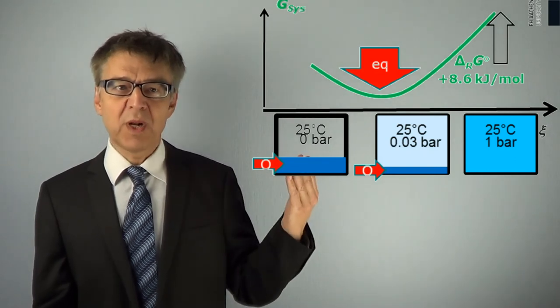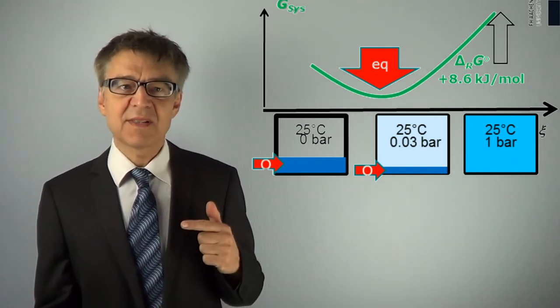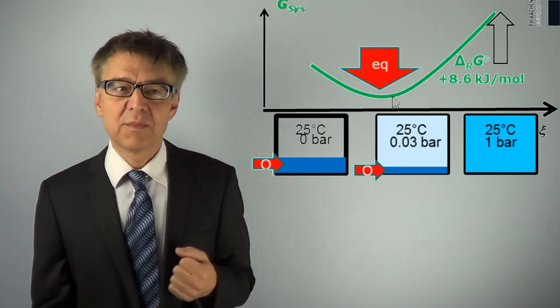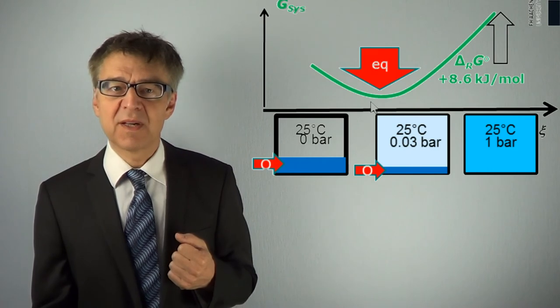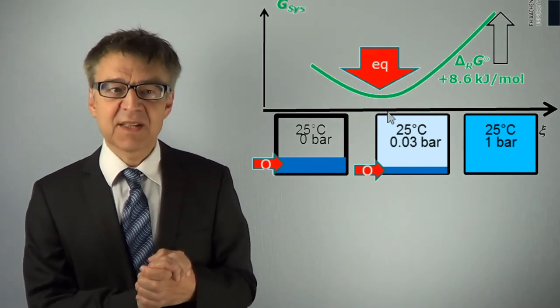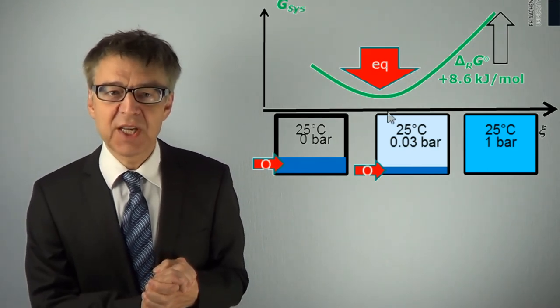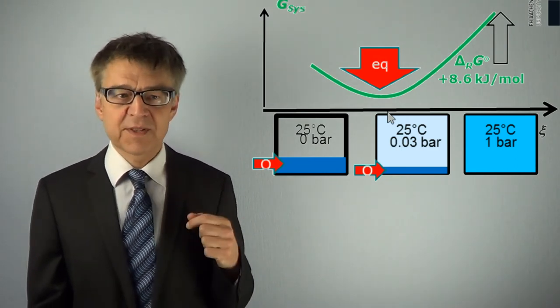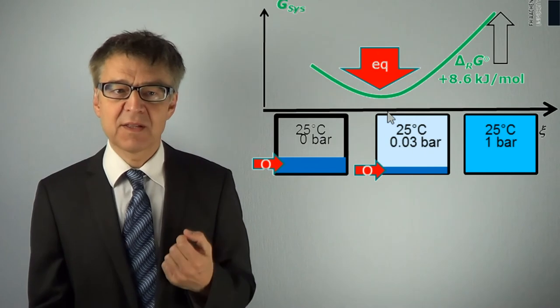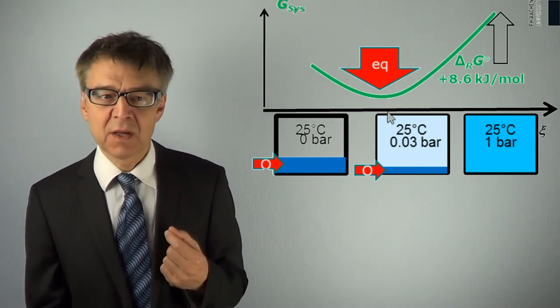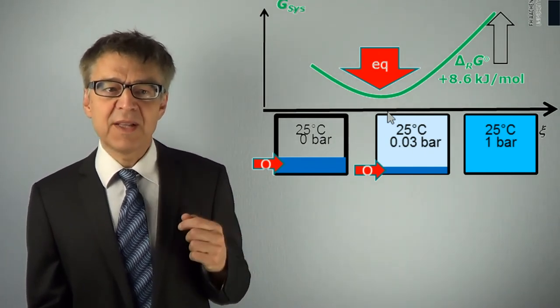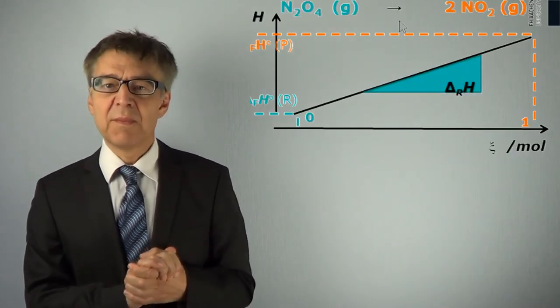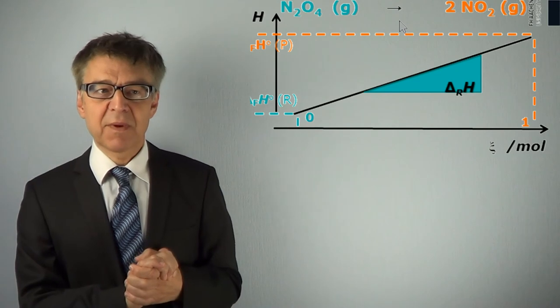Water will evaporate until this extent of reaction psi, then the process will come to a standstill. From the standard Gibbs free energy change delta G0, often called standard drive or standard thermodynamic affinity, you can calculate the equilibrium constant of the process. Let me give you an example for a chemical equilibrium.